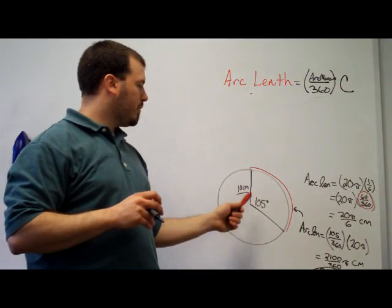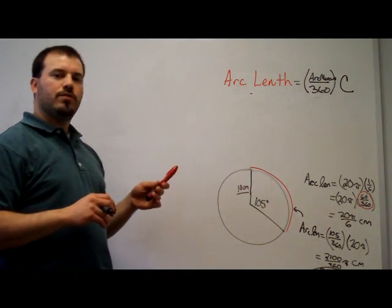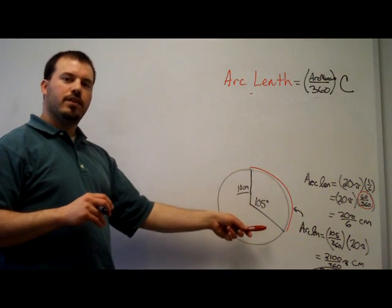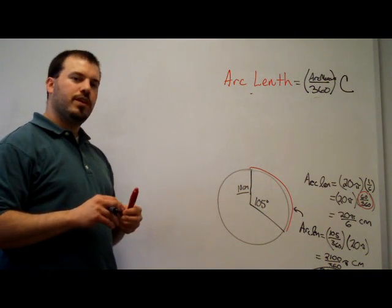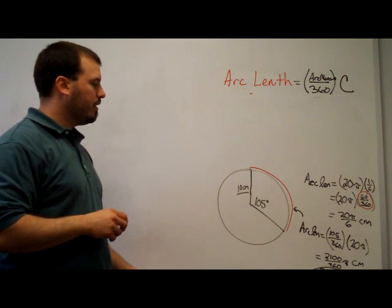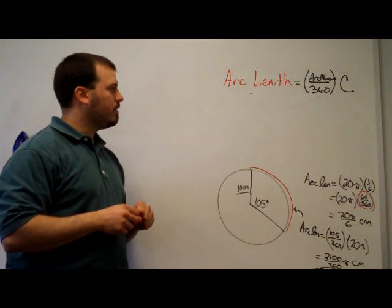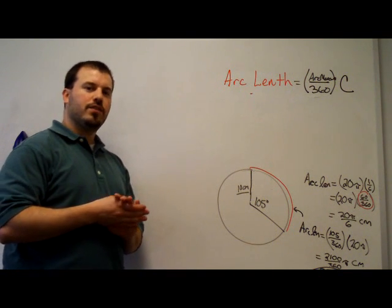And for this particular problem, 20 pi was the circumference. The fraction of the circle is what we're looking at. So we're doing a fraction of the circumference. And that fraction that we set up comes from the angle measure, or the arc measure, which relates to the central angle. That's how you find the arc length of a circle.